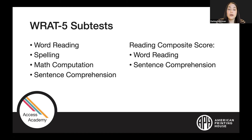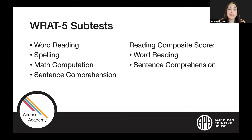The math computation subtest provides a measure of oral math computation skills — how an individual can count, identify numbers, and solve simple spoken problems — ranging from basic arithmetic to advanced operations. The sentence comprehension subtest provides a measure of sentence comprehension skills and linguistic knowledge; the individual supplies a word to fill in the blank, showing their ability to comprehend what they're hearing and use vocabulary skills. These subtests can result in a standard score based on age or grade norms, and together the word reading and sentence comprehension scores combine into a reading composite score.